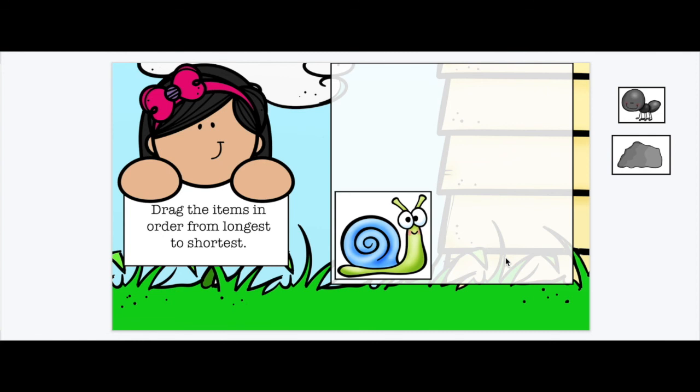What's the medium one? Let's compare these two right up against each other. Yes, the rock is next. And the tiny ant will be the shortest one. It's the next one.